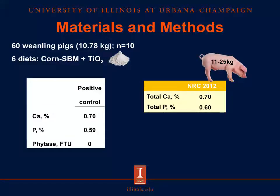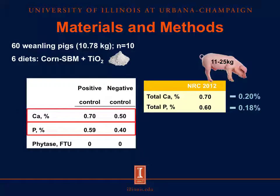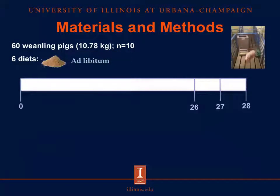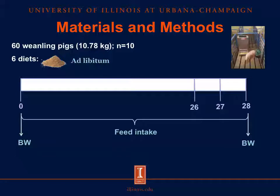In the positive control diet, all nutrients were supplied according to the recommendation of NRC 2012. The negative control diet was similar to the positive control diet, with the exception that inclusion of calcium was reduced by 0.20% units and inclusion of phosphorus was reduced by 0.18% units. The rest of the diets were similar to the negative control diet, but with 500, 1,000, 2,000, and 4,000 FTU of phytase included. Diets were offered on an ad libitum basis. Pigs' weights were recorded at the beginning of the experiment and on the last day of the experiment, day 28. Feed intake was recorded during all trial in order to calculate the average daily feed intake.